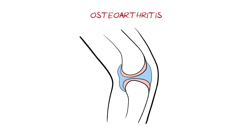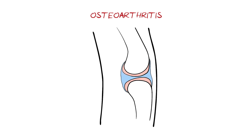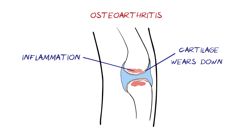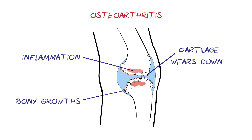In osteoarthritis, however, the cartilage wears down over time, and the joint surface becomes rougher, leading to inflammation. Bony growths can develop around the joint, and extra fluid can build up, causing swelling.